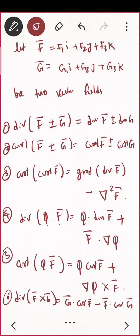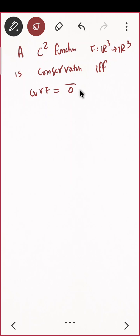This was all about divergence. Now let us give one more definition of conservative. A C2 function — continuously differentiable function f from R3 to R3 — is conservative if and only if curl of f is zero. Curl of f means del cross f equals zero; then it is said to be conservative.